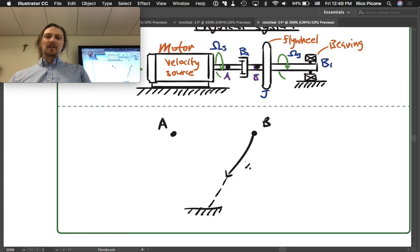Then we've got our source that connects to A, and we put that source direction in the same direction as the coordinate arrow.